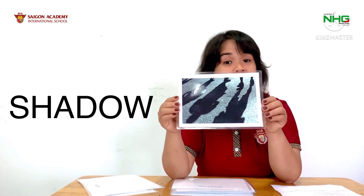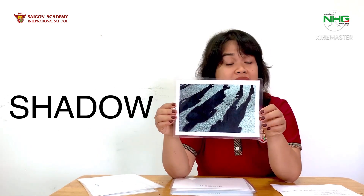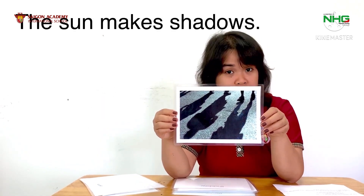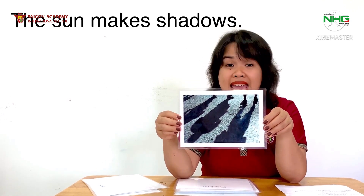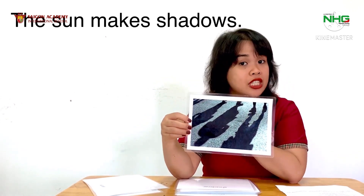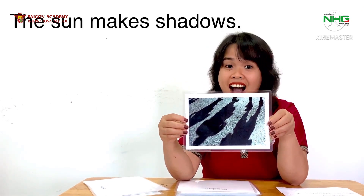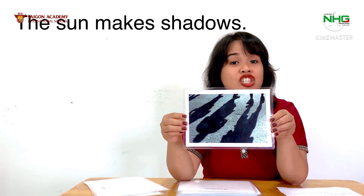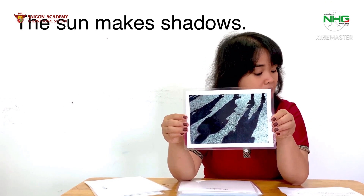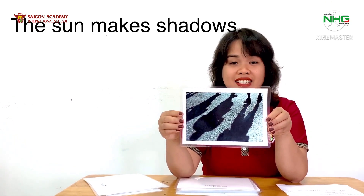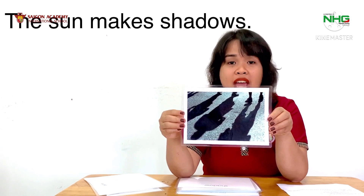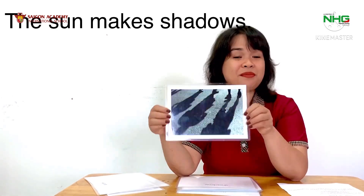Ta-da! What's this? The sun makes shadows. This one is shadow. Repeat after teacher, let's do it slowly: the sun makes shadows. The sun makes shadows.